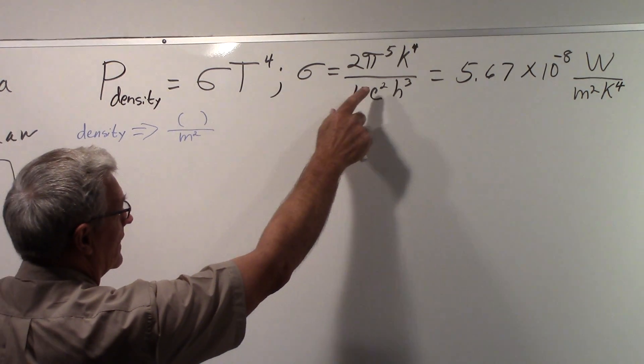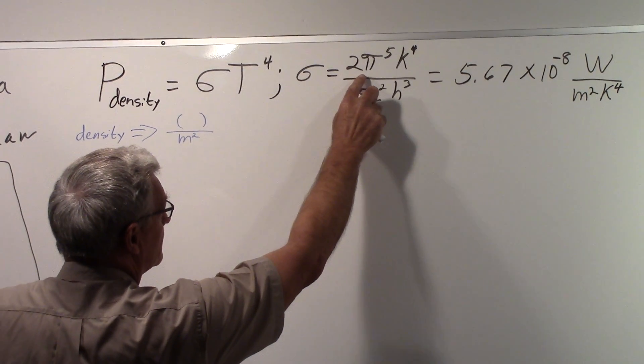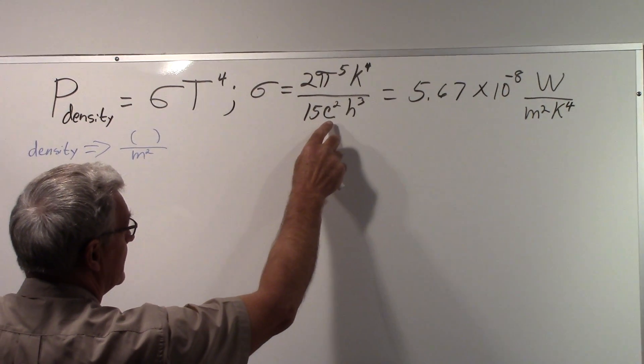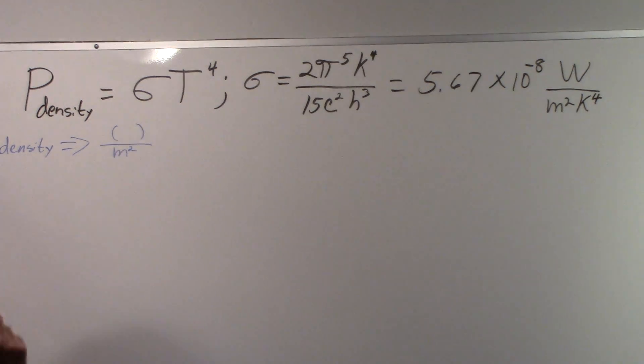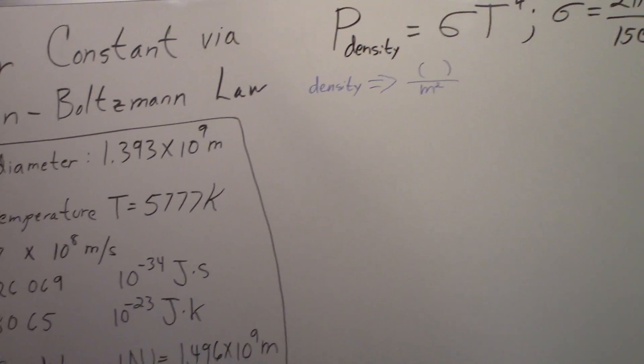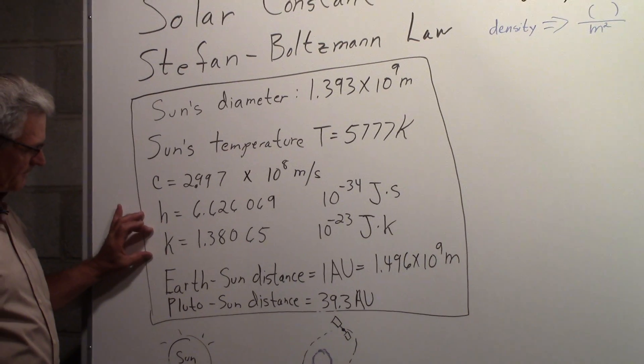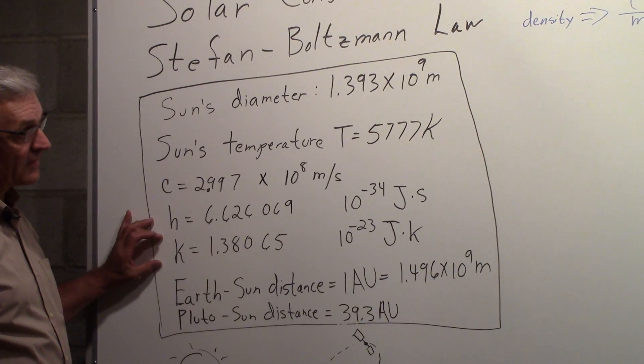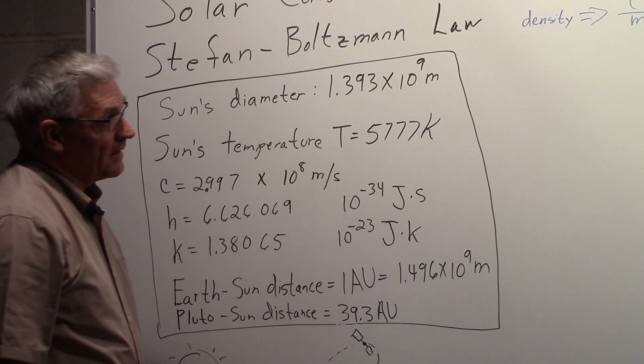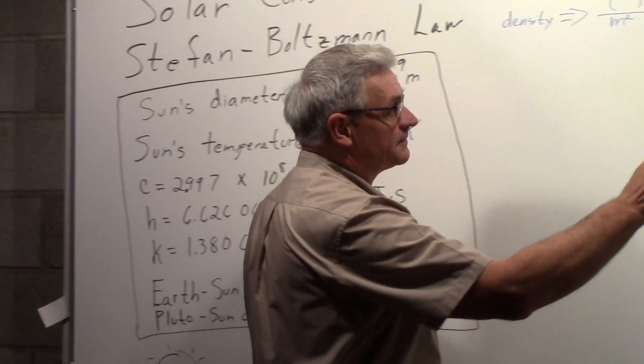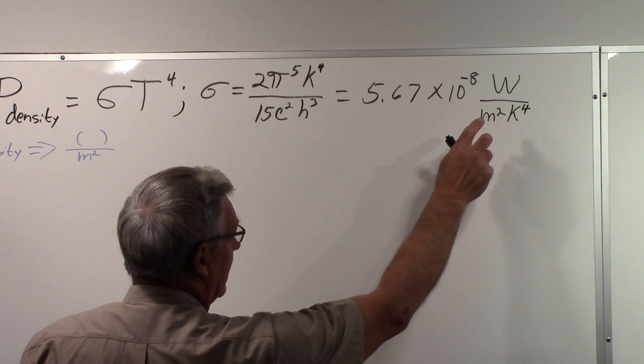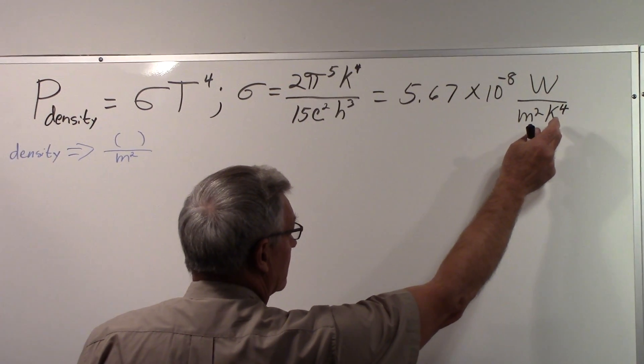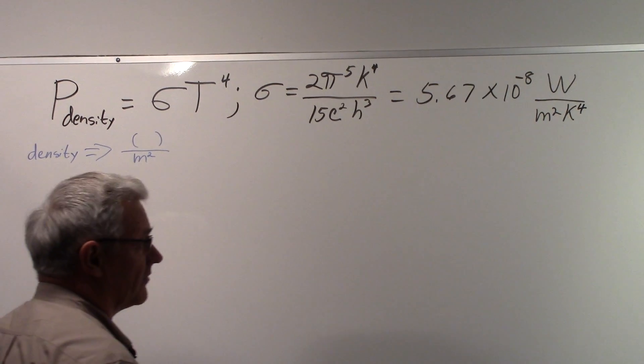Now, the Stefan-Boltzmann constant is equal to 2π⁵k⁴ divided by 15c²h³. And those constants I've listed here: c for the speed of light, h is Planck's constant, and k is Boltzmann's constant. And if you plug those numbers in, you get 5.67 approximately times 10⁻⁸ watts per meter squared per Kelvin to the fourth power.